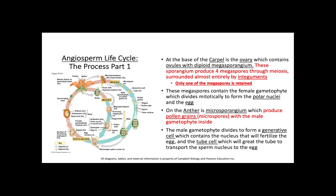Next, we'll look at the life cycle of an angiosperm. At the base of the carpel — noted in the figure on the left — is the ovary, which contains ovules with diploid megasporangium. These sporangia produce megaspores through meiosis, surrounded almost entirely by integuments, which is a coating. These megaspores contain the female gametophyte, which divides mitotically to form the polar nuclei and the egg. On the anther is microsporangium, which produces pollen grains or microspores with the male gametophyte inside. The male gametophyte divides to form a generative cell, which contains the nucleus that will fertilize the egg, and a tube cell, which creates a tube that reaches down into the archegonium to transport the sperm nucleus to the egg.